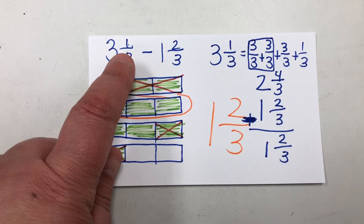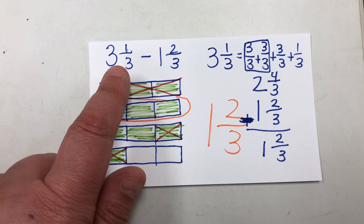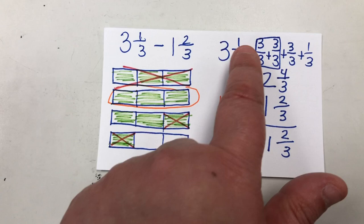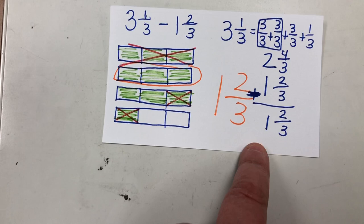In math, we're working on adding and subtracting mixed numbers. With three and one-third minus one and two-thirds, I had to show students how to rename three and one-third into something different. We started by thinking: three and one-third can be written as three-thirds plus three-thirds plus three-thirds plus one-third. Then they can take two of those to make two wholes and add the remaining thirds to make four-thirds. Then I can easily subtract four-thirds minus two-thirds, which is two-thirds, and two minus one is one.